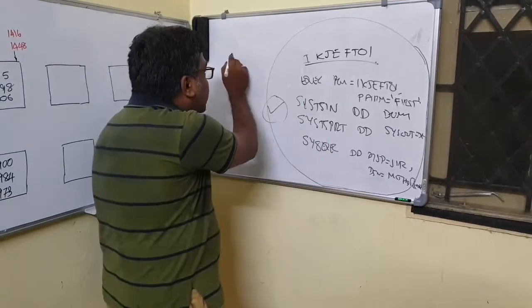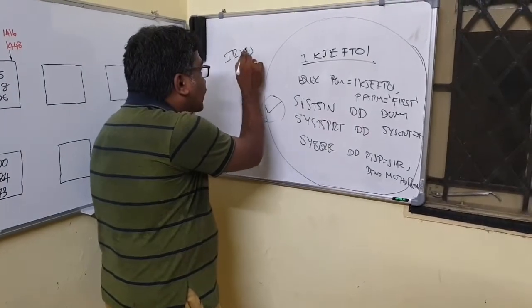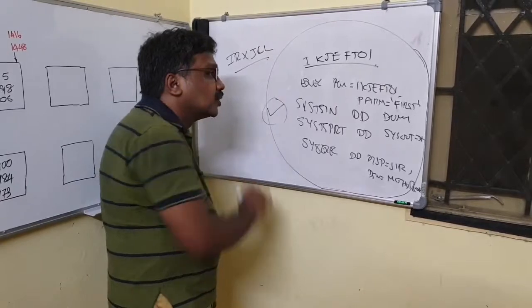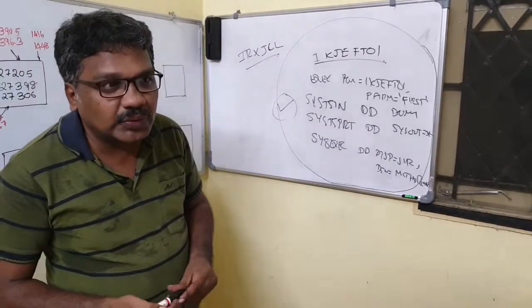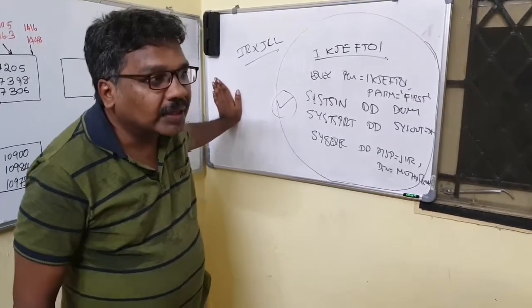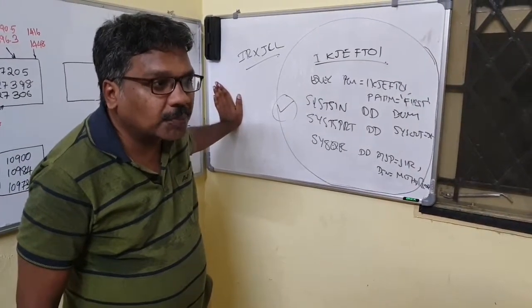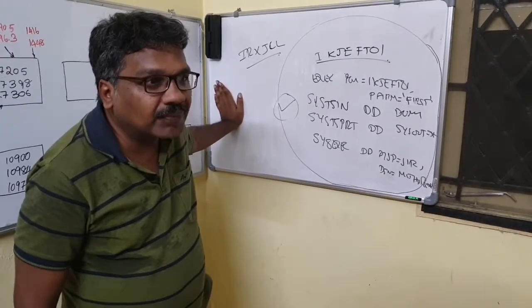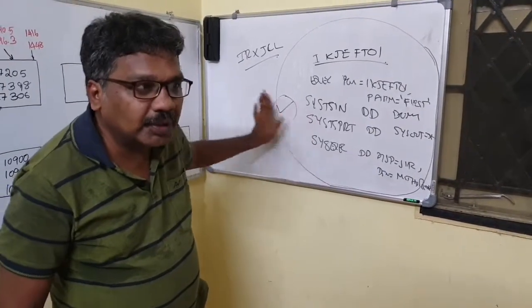This is one way of executing. There is another way, more or less similar steps and data set allocation, but the utility name can be IRXJCL. So what is the difference between this? This is working on the TSO environment, this will be working on the MVS environment.